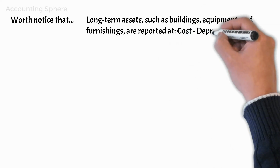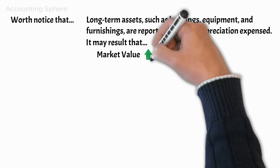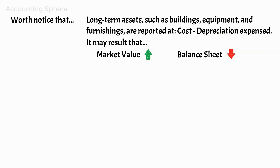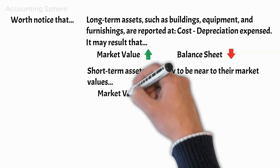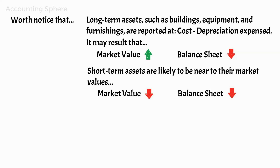Long-term assets such as buildings, equipment, and furnishings are reported at their cost minus the amounts already sent to the income statement as depreciation expense. As a result, while the market value of a building may have grown since its acquisition, the amount on the balance sheet has continually decreased as the accountant transferred some of its cost to depreciation expense on the income statement to meet the matching principle. Generally speaking, short-term asset levels are likely to be close to their market values, as depreciation is not seen as a valuation procedure by accountants but as an allocation process between costs, expenses, and revenues generated by the asset.